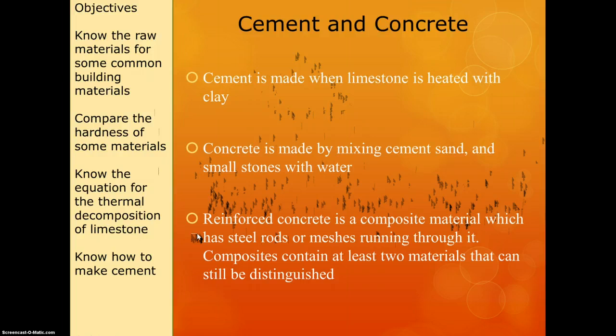Next up: cement and concrete. Cement is made when limestone is heated with clay. Concrete is made by mixing cement, sand and small stones with water. Then we have reinforced concrete, which is what we call a composite material — basically concrete with steel rods or meshes through it that make it stronger. Composite materials contain at least two materials that can still be distinguished. In reinforced concrete, you can see the concrete and the steel rods, so even though they're combined you can still see the individual components — that's what makes it a composite material.